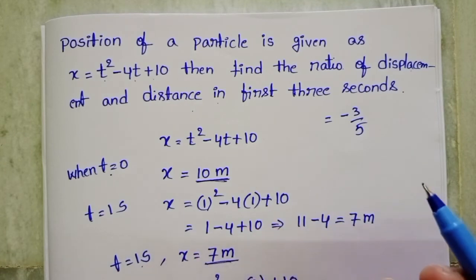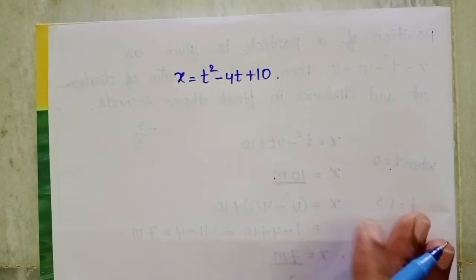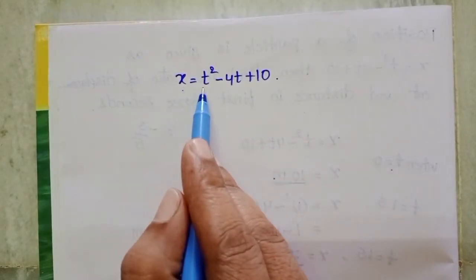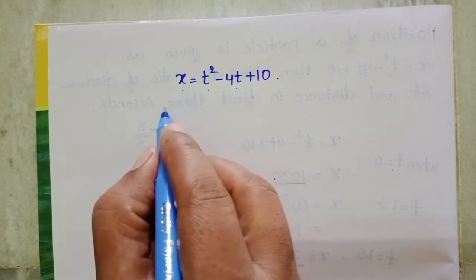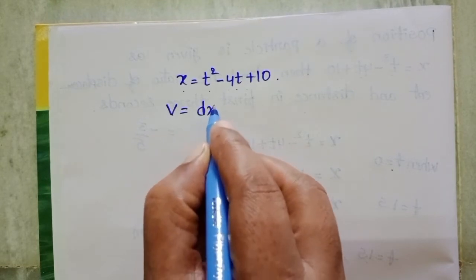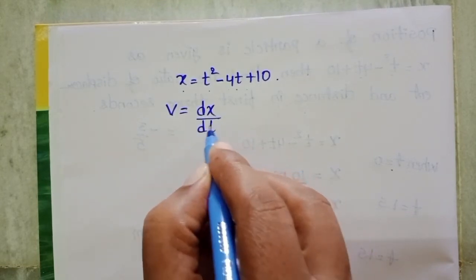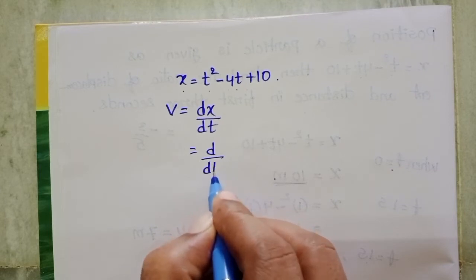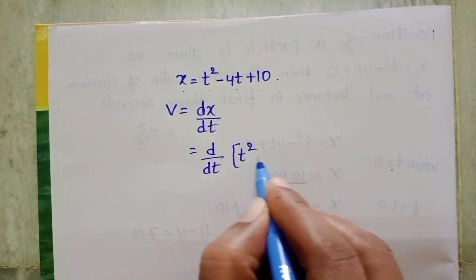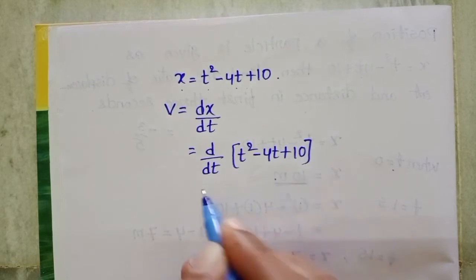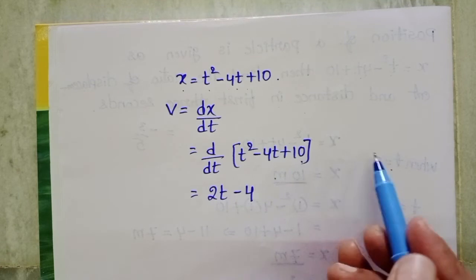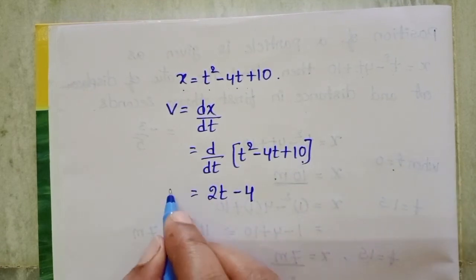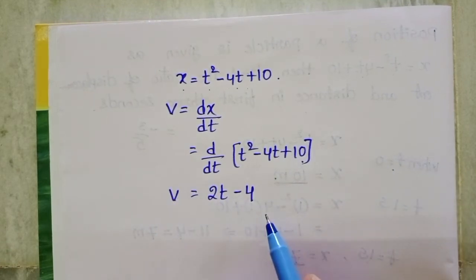The same question can be solved using the velocity-time graph. Given x = t squared minus 4t plus 10, differentiate with respect to time. Velocity equals rate of change of displacement, so v = d/dt(t² − 4t + 10) = 2t − 4.